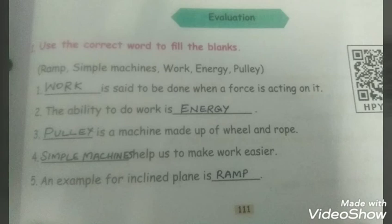Evaluation. Use the correct word to fill the blanks: ramp, simple machines, work, energy and pulley. Work is said to be done when a force is acting on it. The ability to do work is energy. Pulley is a machine made up of wheel and rope. Simple machines help us to make work easier. An example for inclined plane is a ramp.